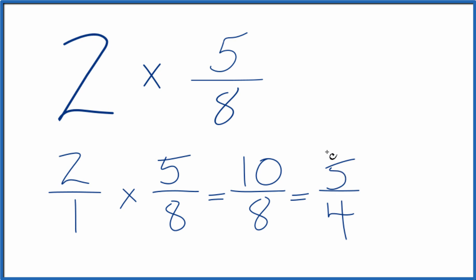5 fourths is an improper fraction. If you wanted to convert this to a mixed number, you could divide 4 into 5. So 4 goes into 5 one time. 1 times 4 is 4. We have 1 left over. Bring the 4 across. You could call 5 fourths, 1 and 1 fourth as well.